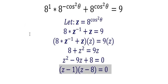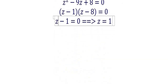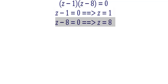This quadratic can be factored as (z minus 1)(z minus 8) equals 0. So that means z minus 1 equals 0, giving z equals 1, and z minus 8 equals 0, giving z equals 8.